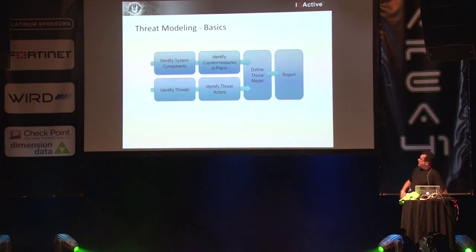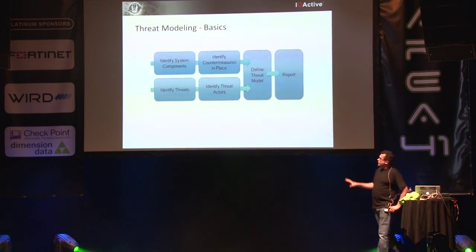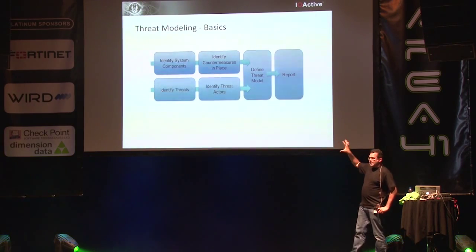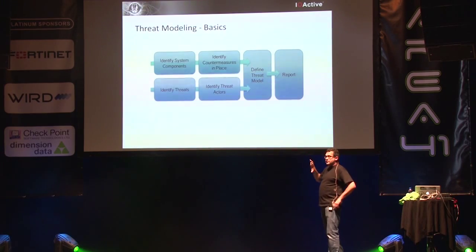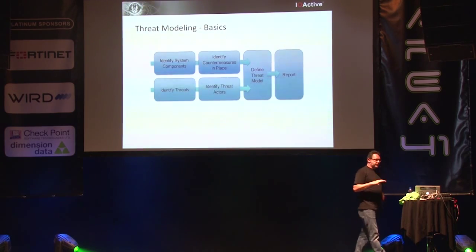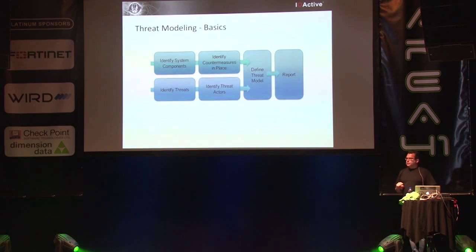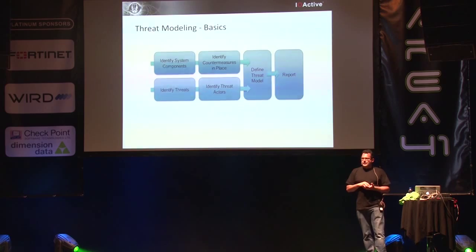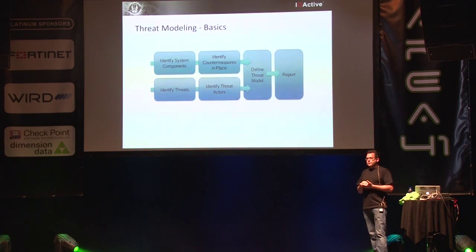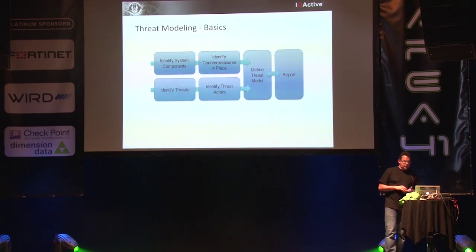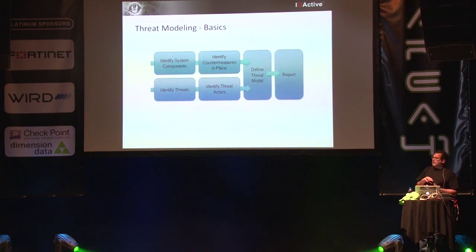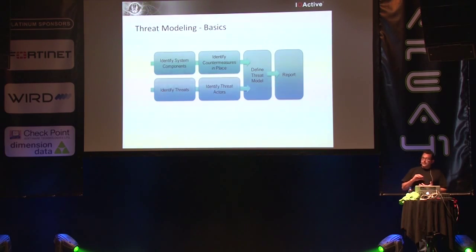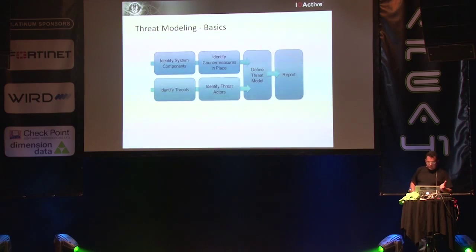Threat modeling basics — this is the process I use when working with clients. There are two streams. You look at a system holistically, identify all the components, and identify the countermeasures in place. You're not only looking at the software you're building, but also the platform and security properties of the hardware it will run on, because there are countermeasures you can leverage. You shouldn't build your own crypto — there are things at the OS and hardware level you can use.